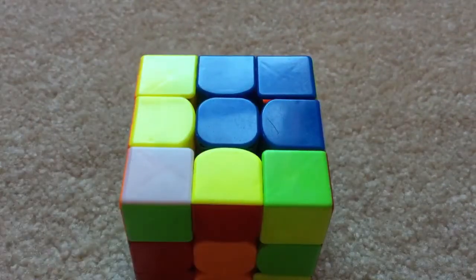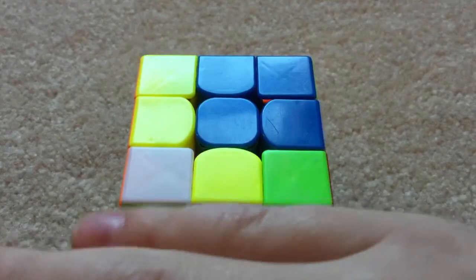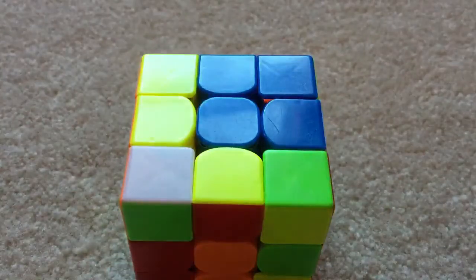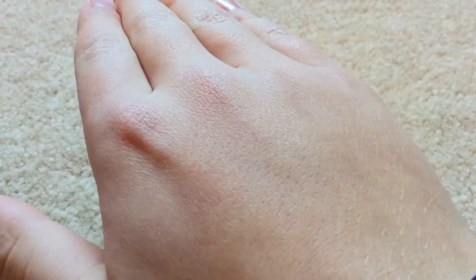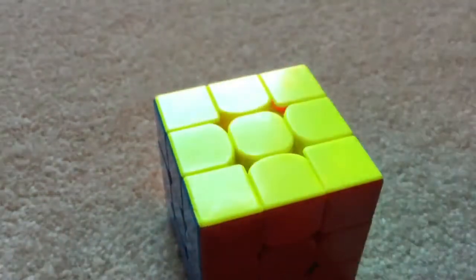So this method is called wave. It's a fairly simple method. And I can get really fast times with it. You basically just wave your hand over the cube, and it solves. It's really fun to do. You have to wait a couple seconds for it to work. When it does work, it is one of my favorite methods.